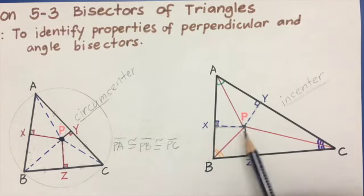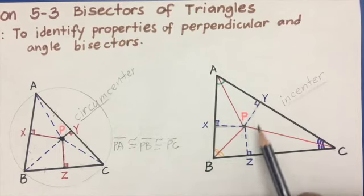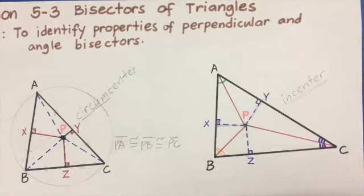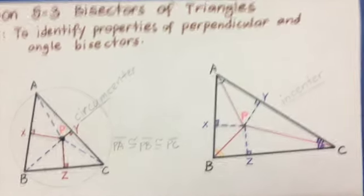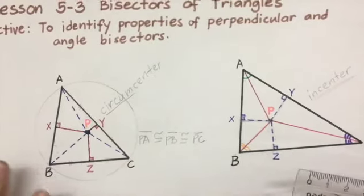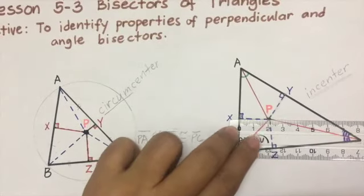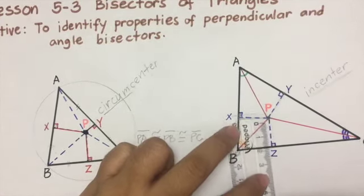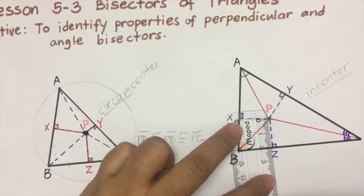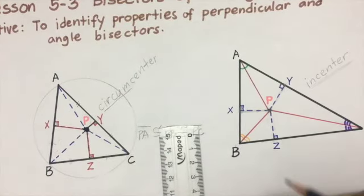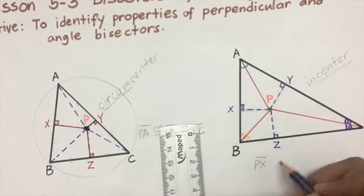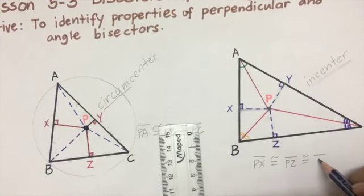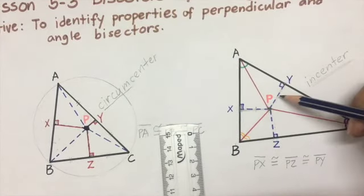So what is the relationship between these three distances? PX, PY, and PZ are congruent to each other. If you use a ruler, PX is approximately 2 centimeters, PY is approximately 2 centimeters, and PZ is also 2 centimeters. So as a conclusion, segment PX is congruent to segment PZ, and also congruent to segment PY. These three segments are congruent to each other.